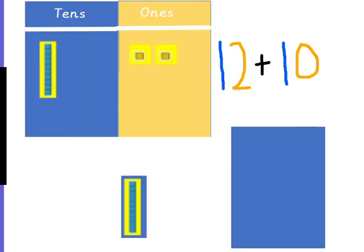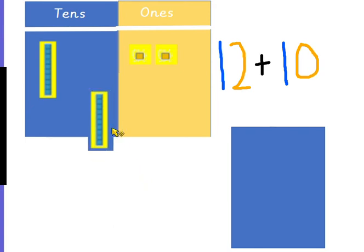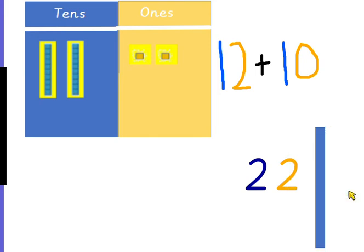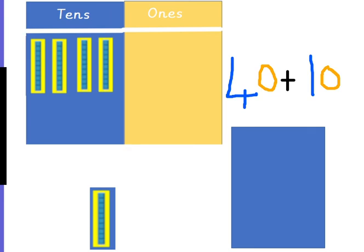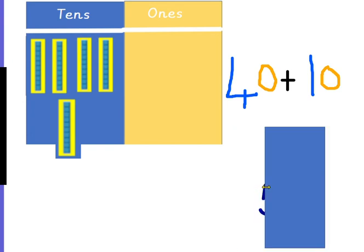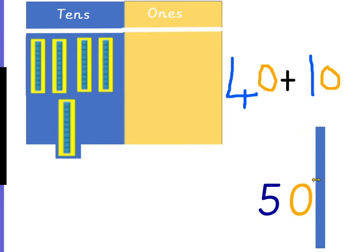What about 12 add 10? If I add 1 more ten, I won't just have 1 ten anymore. I've added a 10 and now I've got 2 tens. And I didn't add any 1's — I've still got 2 units. So 12 add 10 is 22. What about 40 add 10? If I add another 10, I won't only have 4 tens. 4 add 1 is 5, so we've now got 5 tens. We didn't have any 1's to start with and I haven't added any, so that number needs to be 0. 40 add 10 is 50.